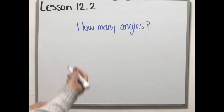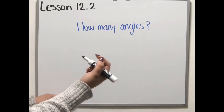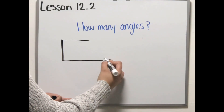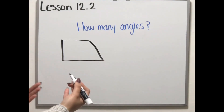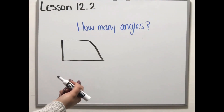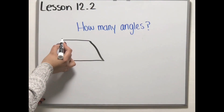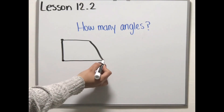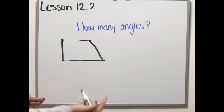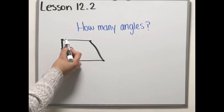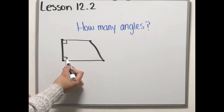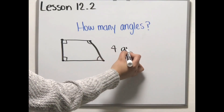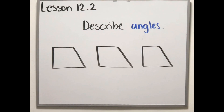To find the angles on a plane shape, we need to look for the corners or the endpoints of each shape. For example, if I have a shape like this one, how can I find how many angles this plane shape has? I need to look for the endpoints — that's one, this one is another endpoint, another endpoint, another endpoint. So you actually have four angles in this shape.